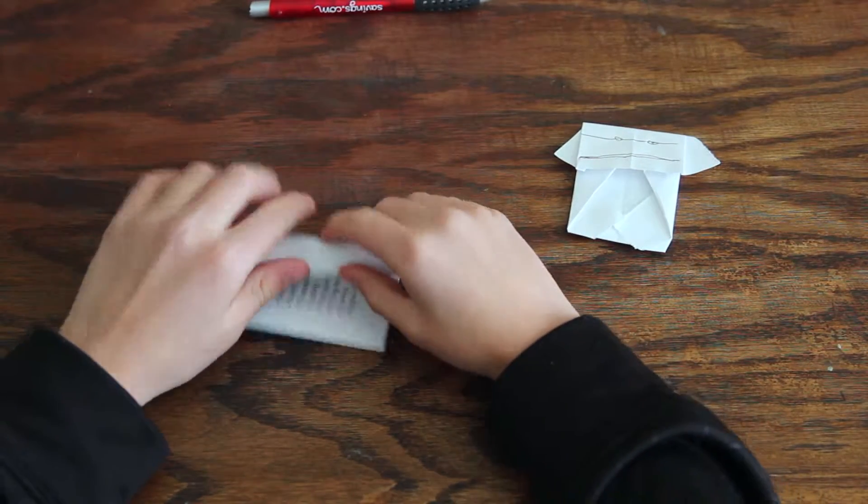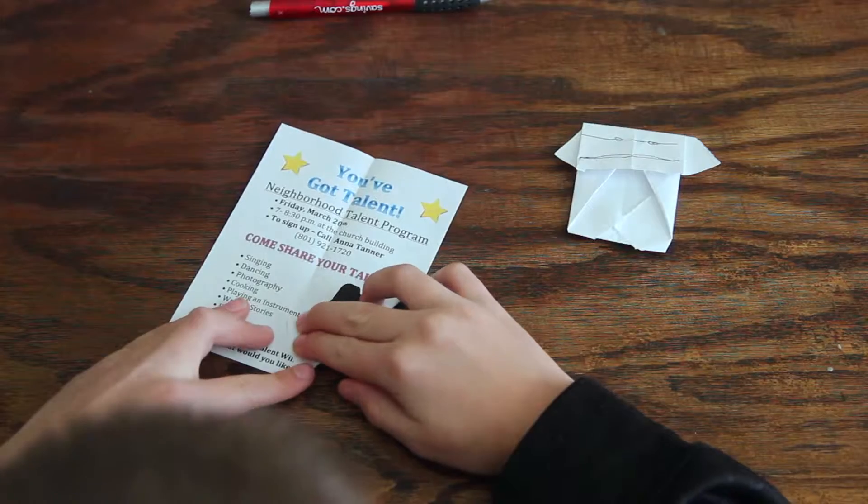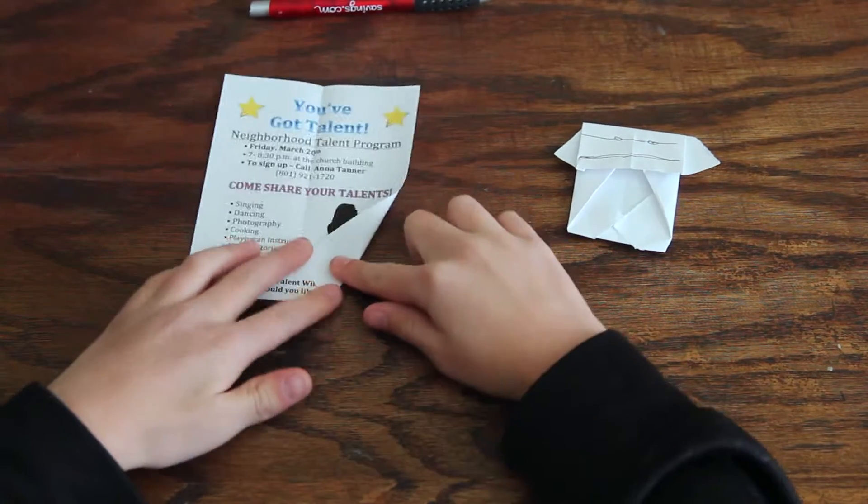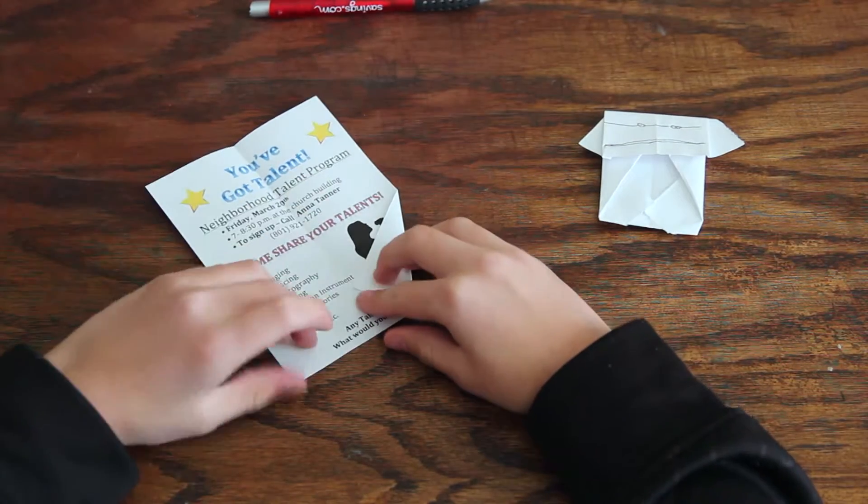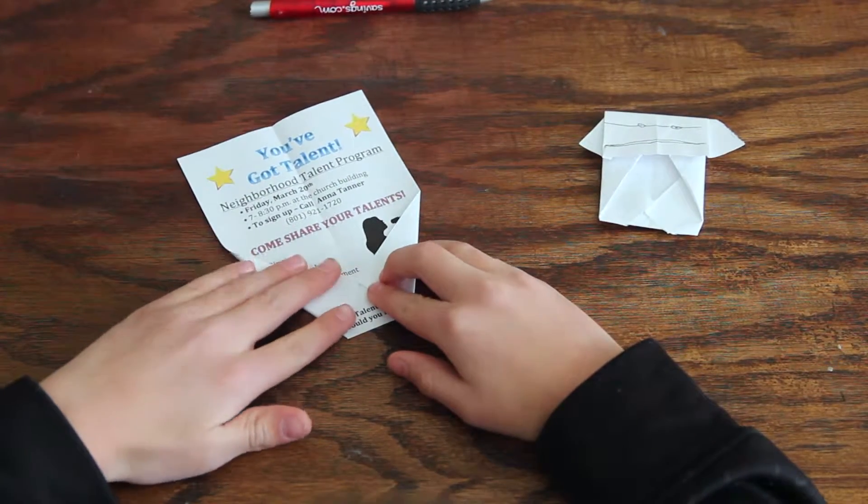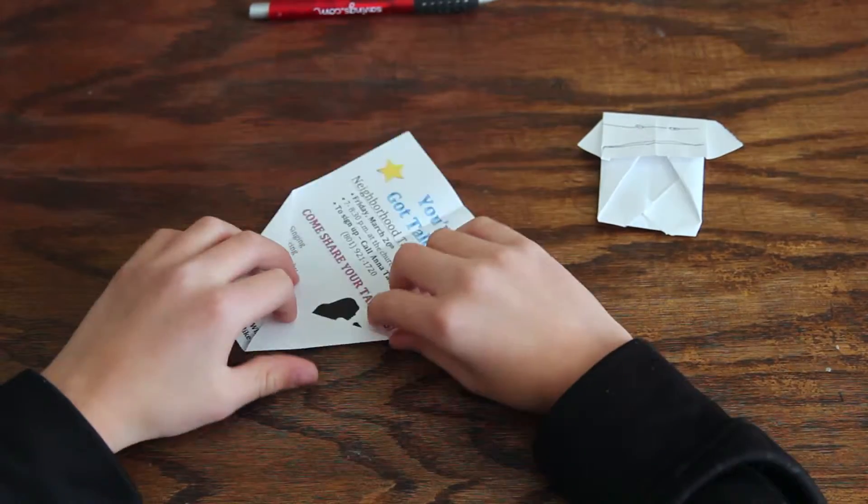You unfold it and go like this and just throw it in like that. Make sure you get it good in the middle. Those are going to be his hands.